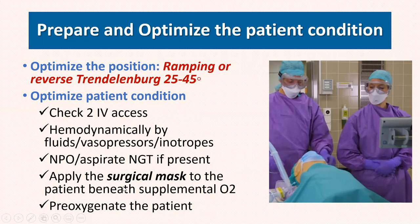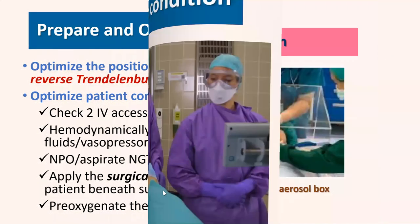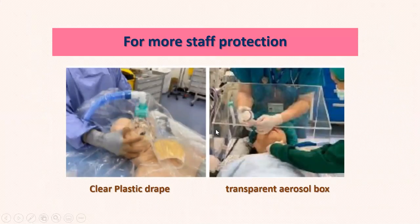Before entering the room, prepare your circuit: bag-valve-mask device connected to an HME antiviral filter, with a waveform capnography — this is recommended — plus optional extension tubing and a PEEP valve for hypoxemic patients. The filter can be placed at the exhalation port or between the PEEP valve and the BVM bag to prevent aerosolization of the virus to staff.